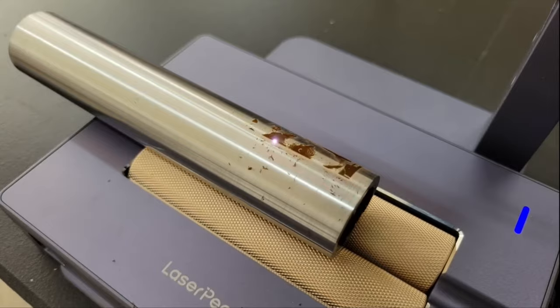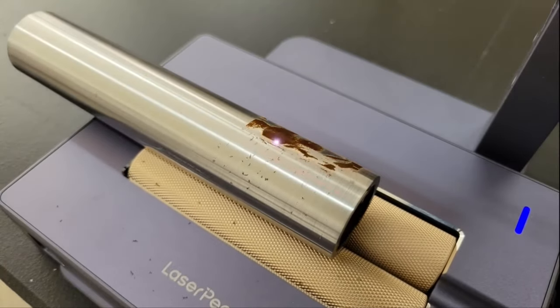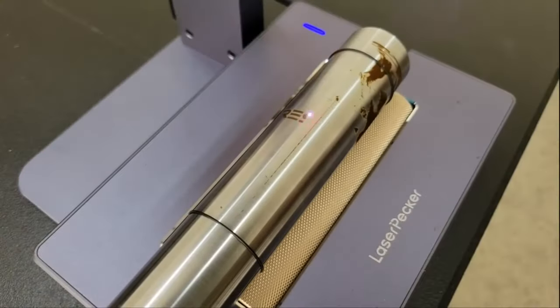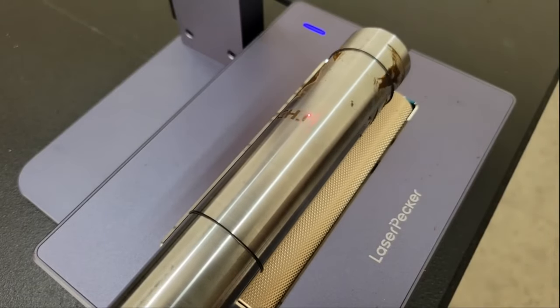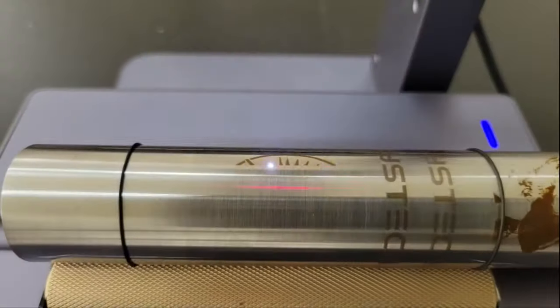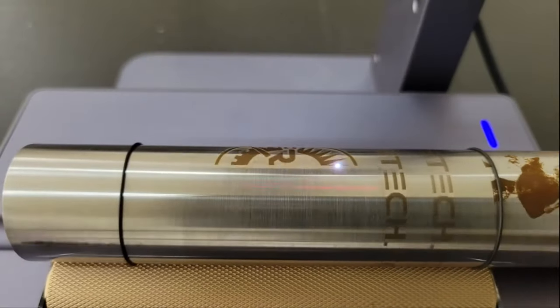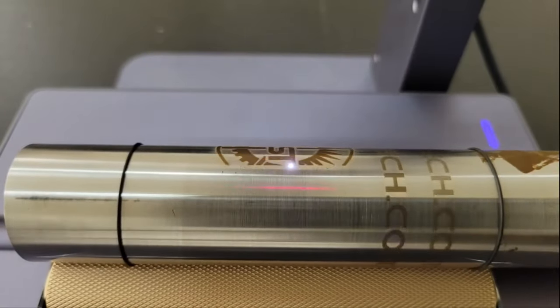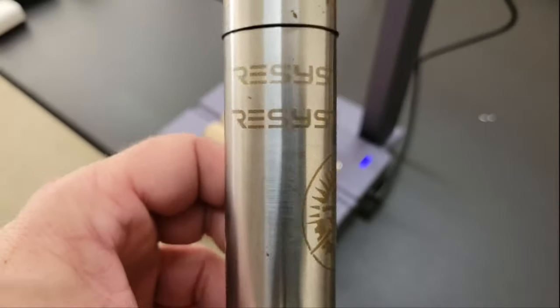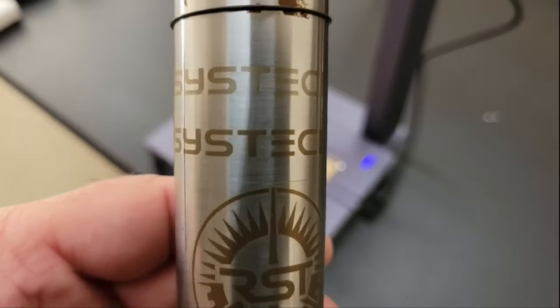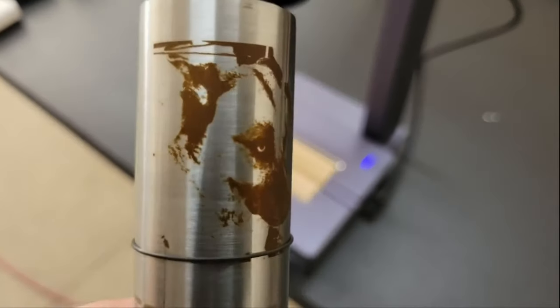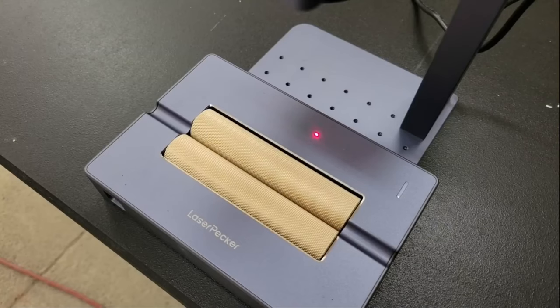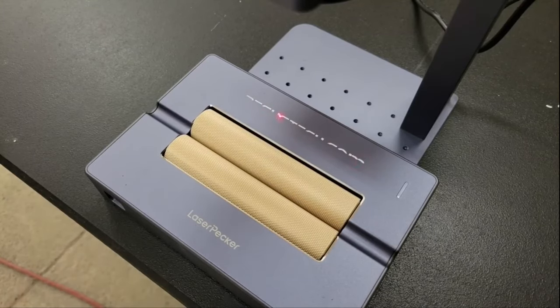The rotary also comes with a bag of various sized rubber rings that can be slipped over smooth objects like this chromoly tube to provide better grip and prevent slipping. I did see some evidence of that during the first attempt, so I used the rubber rings and it hasn't happened since. Of course I couldn't resist engraving the rotary itself.